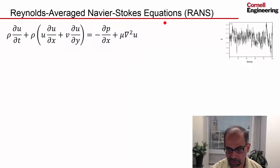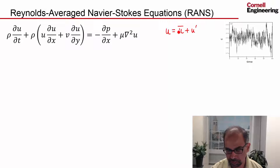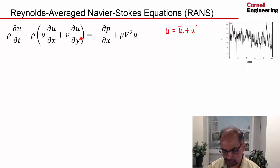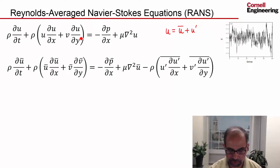Then you use the Reynolds decomposition. You decompose the velocity into the Reynolds average and the fluctuation, substitute this in, do an averaging, and you will get that equation.